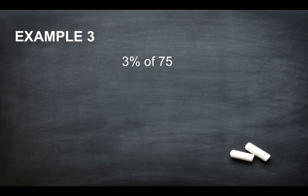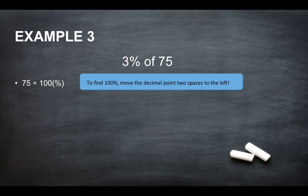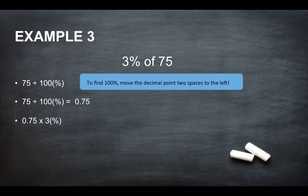Example 3, we've got 3% of 75. So 75 divided by 100. Move the decimal point two spaces to the left to give you 0.75. 0.75 times 3.